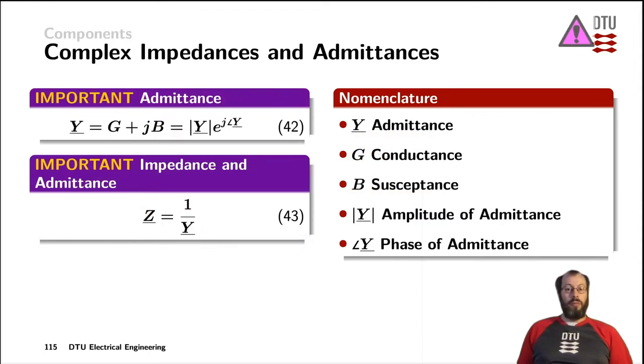The reciprocal of an impedance is an admittance. Both of them are complex numbers. The real part of an admittance is called the conductance, and the imaginary part of an admittance is called the susceptance. And again, as it's a complex number, it can be rewritten as an amplitude and a phase.